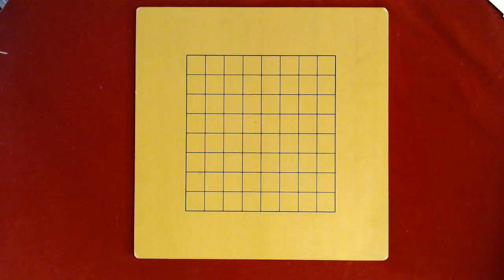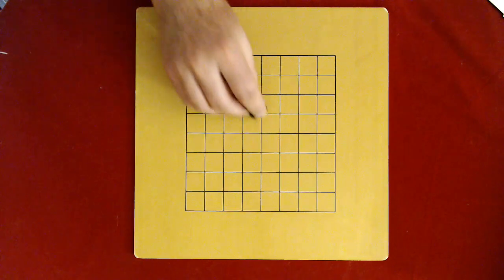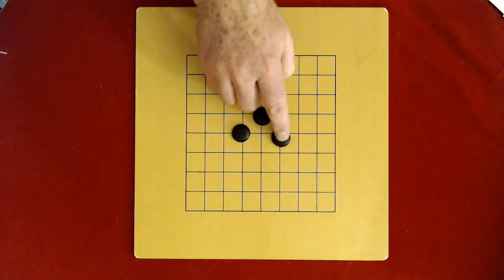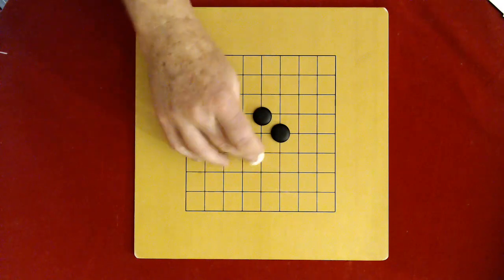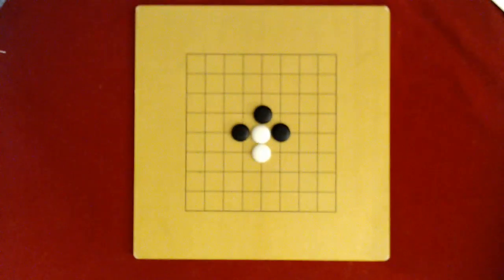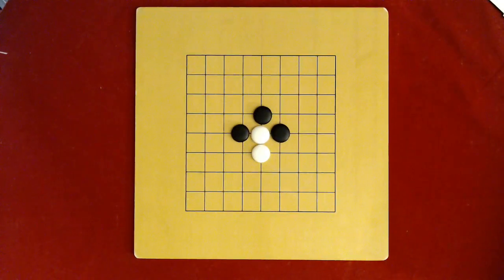Anyway, in First Capture Go, just whoever captures first wins. And the initial position starts out something like this, where white has already poked into the tiger's mouth and now has two cutting points, and it's white's turn.